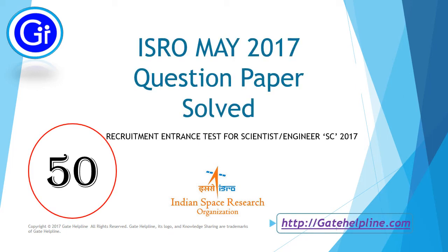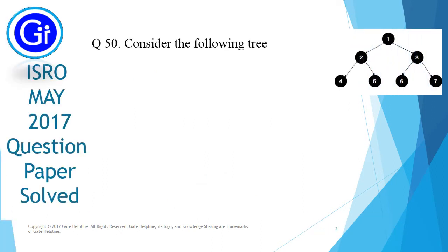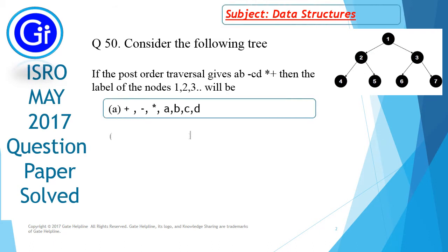Hi friends, today we are going to see question 50 from ISRO May 2017 question paper. Question 50 is: consider the following tree. If the post-order traversal gives this expression, then the label of the nodes 1, 2, 3 and so on will be — and these are the options.